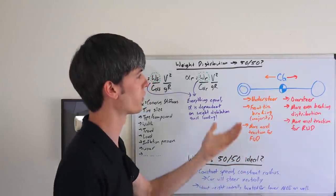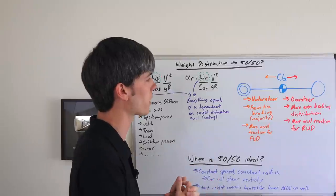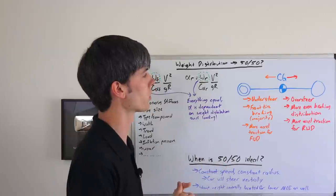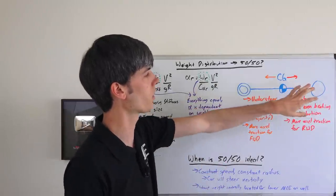That's a great benefit of having your CG back a little bit. You also will obviously have more traction if you have a rear-wheel drive vehicle where you've got that weight over the rear tires.